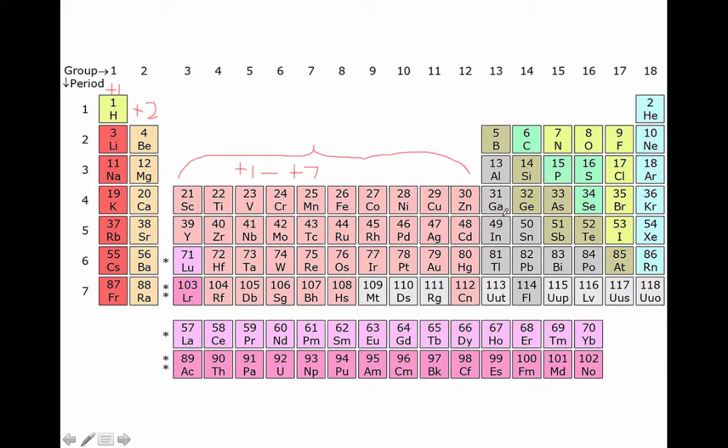Starting with column 13, these metals here have three valence electrons. They are going to lose their three valence electrons and form a positive three cation.